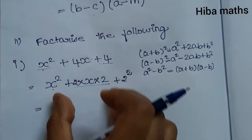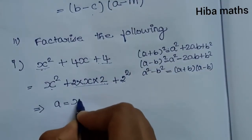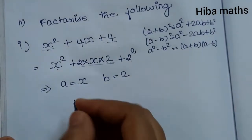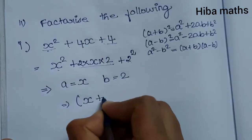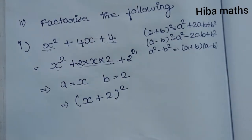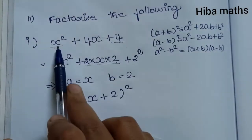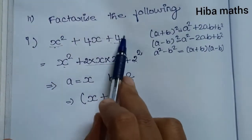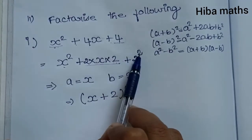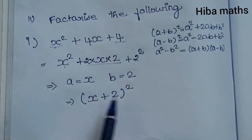In the next step, we write the shorter form. Since a = x and b = 2, using (a+b) whole square, the answer is (x+2)². The first term is x² and the last term 4 equals 2². This is very easy to verify by expanding.